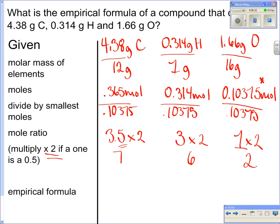So I go back up. So really my final answer is that carbon has a 7 on it, hydrogen has a 6 on it, and oxygen has a 2 on it. So that's how you do an empirical formula that ends up having a number that you need to multiply by 2 when it doesn't come out even.